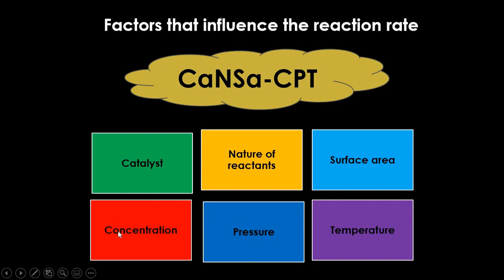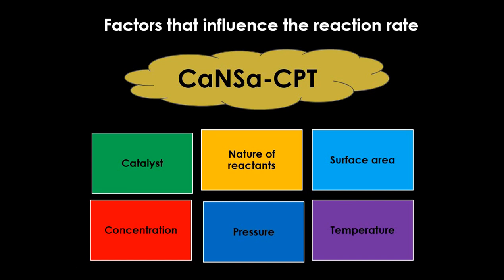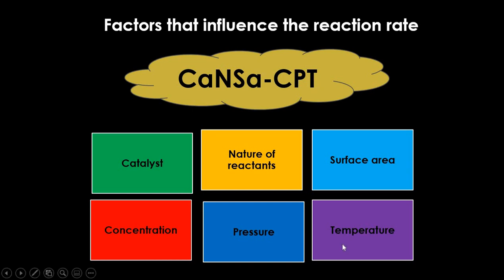A higher concentration gives a higher rate of reaction because there are more particles per cubic decimetre of gas or solution, increasing the probability of particle collisions. Increasing the pressure of a gas squashes the particles together, also increasing the probability of collisions and the rate of reaction. Temperature increases the kinetic energy of the particles so they move faster, which also increases the probability of collisions and the rate of reaction.